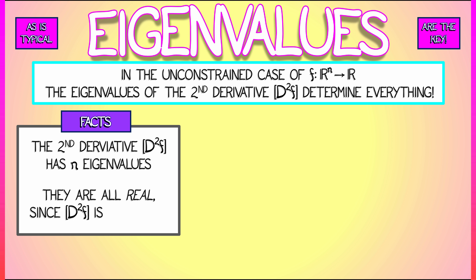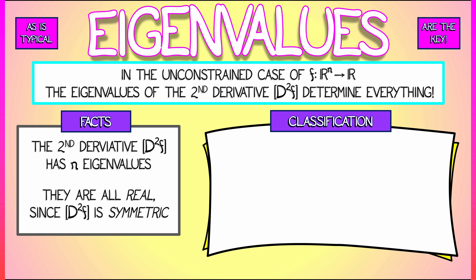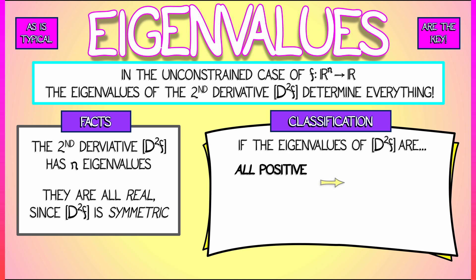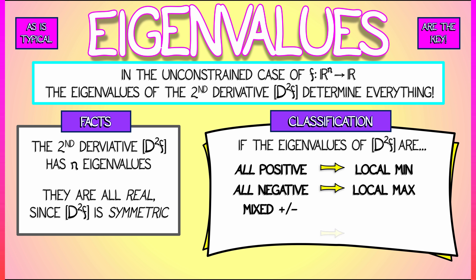These eigenvalues are all going to be real since the Hessian is always a symmetric matrix. What do the eigenvalues tell us about critical points? If all the eigenvalues of the Hessian are positive, we have a local min. If all the eigenvalues are negative, we have a local max. Having a mixture — some positive, some negative — gives precisely a saddle point, with different types of saddle points possible in higher dimensions. If some eigenvalues are zero, you have a degenerate critical point and may need to do a bit more work.